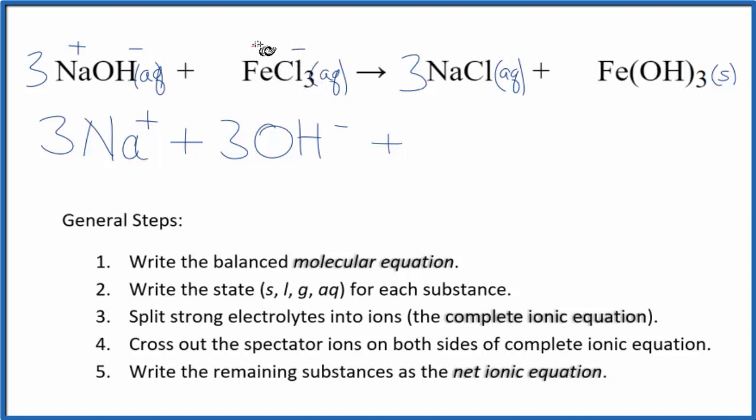So since we have 3 of them, this has to be 3 plus. That's why we call it iron 3 chloride. So we'll have Fe3+, that's the iron 3 ion, plus 3 of these chloride ions, 3 Cl-. Those are our reactants.